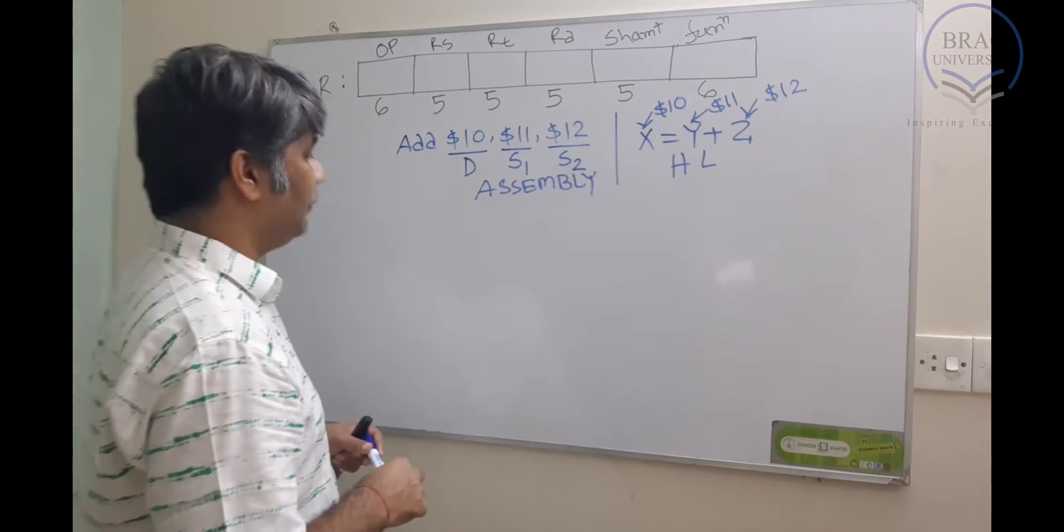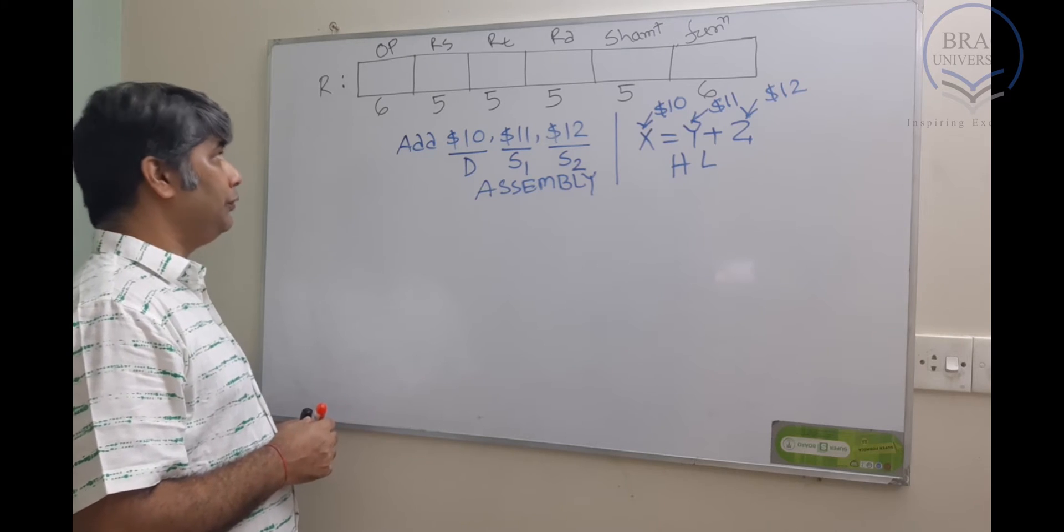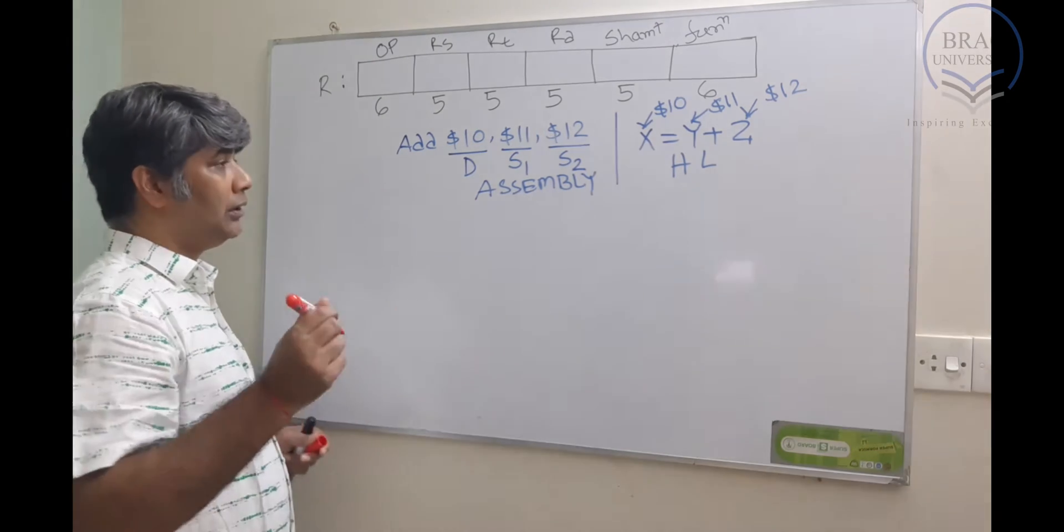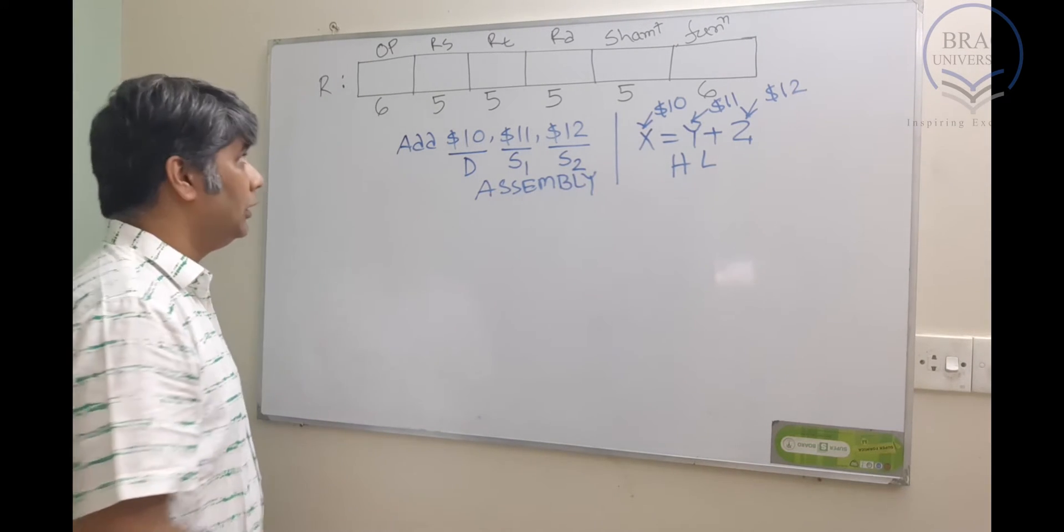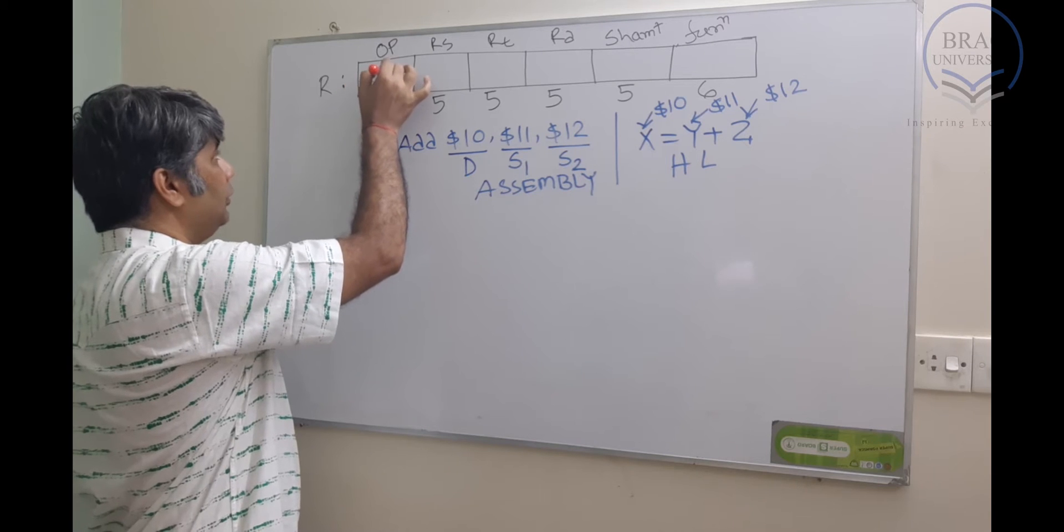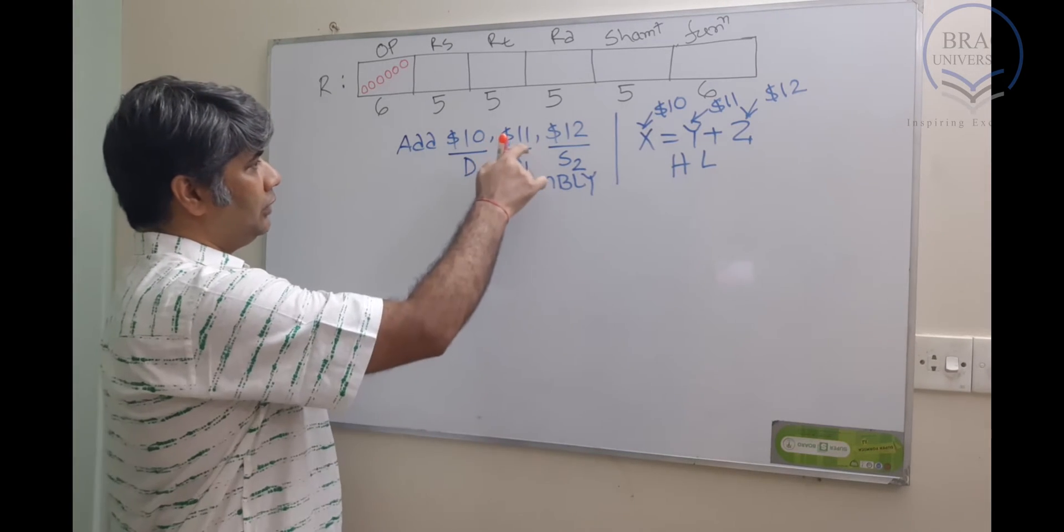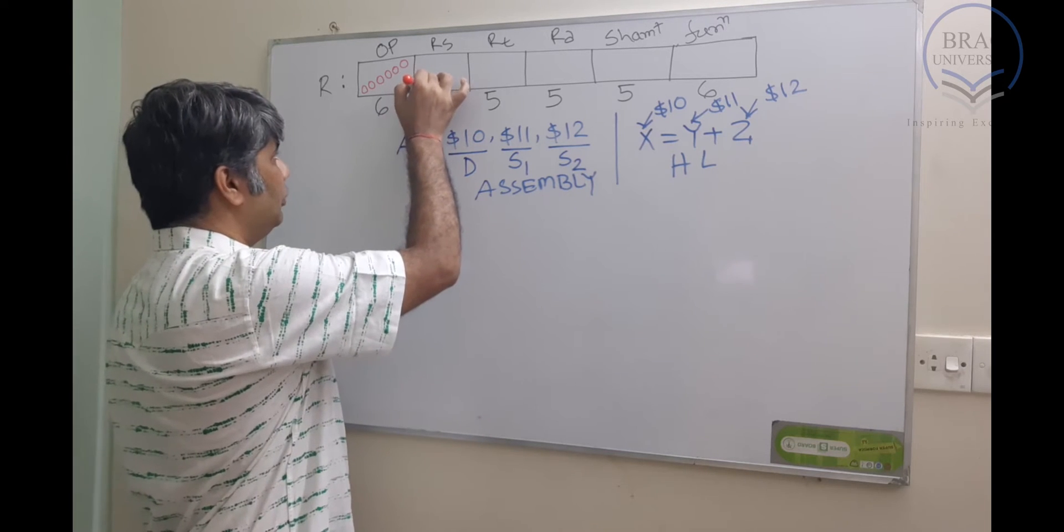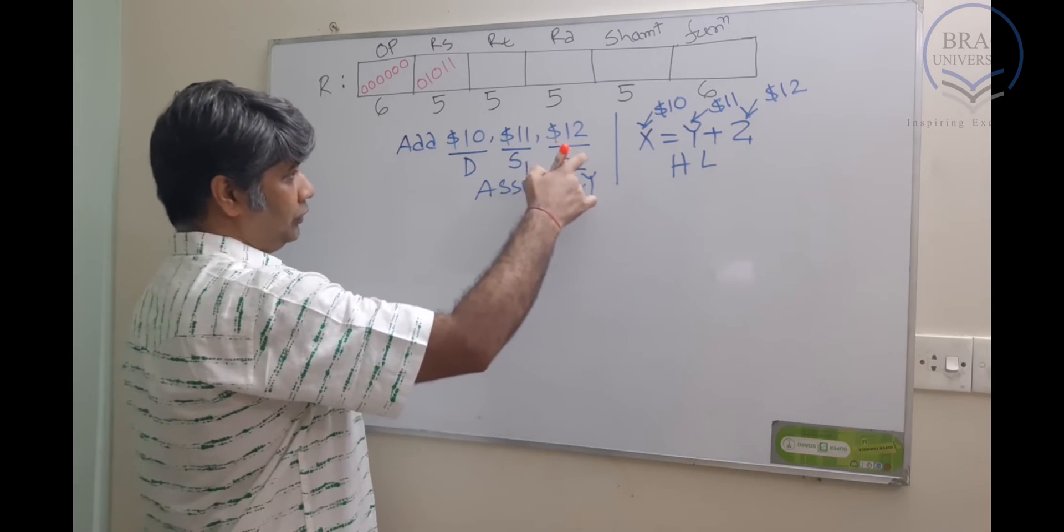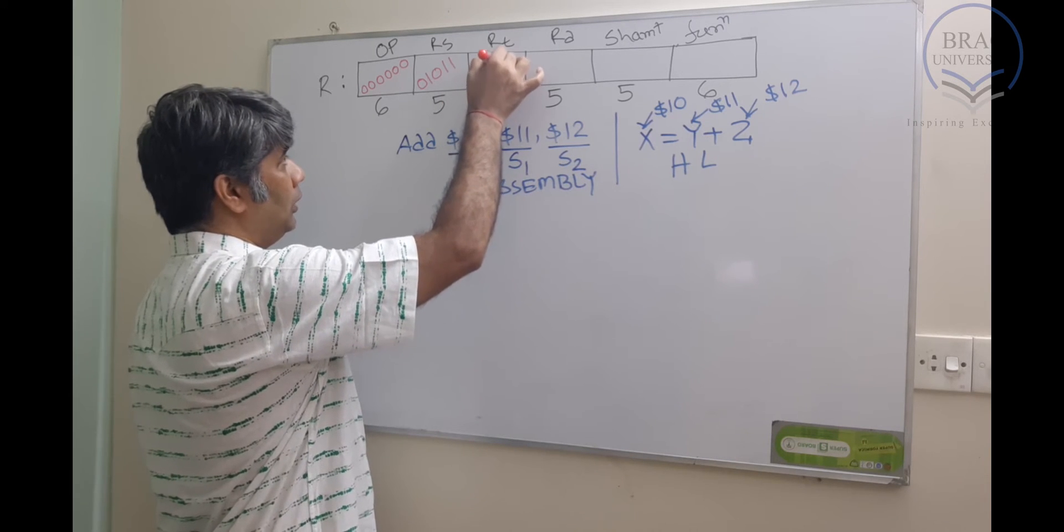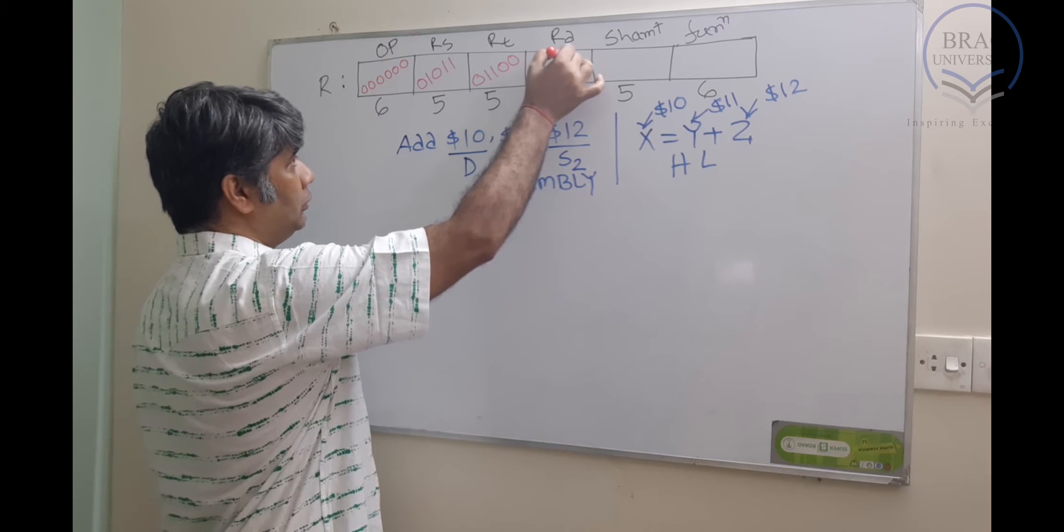Now our job is to encode this, which means we need to encode it in a form that our hardware understands. The first thing that we need to fill is the opcode part. You should remember that for all R-type instructions, this opcode 6 bits will be 0, so six zeros. Then rs, that is register 11, which is 01011. Then rt, that is our second source register, which is 12, so 01100. And then our destination, which is 10, so 01010.